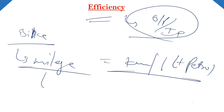Kuch bikes hoti hain jo 15 kilometer ki mileage deti hai, kuch 20, 30, 50, 60. So woh basically kya hota hai - its efficiency. Woh us particular machine ki efficiency hai, performance hai.